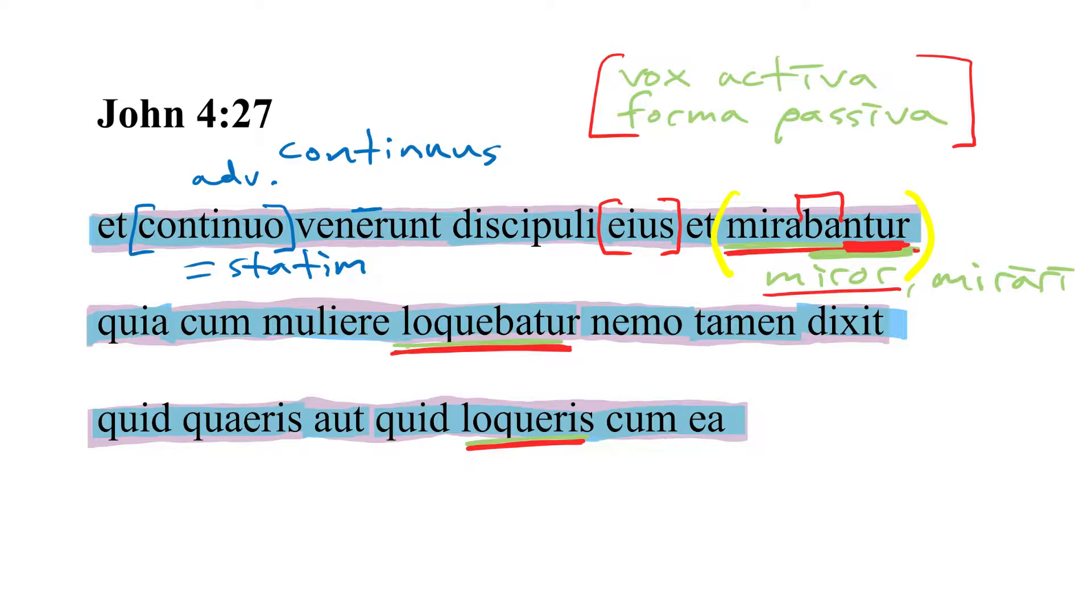But it's not they were being wondered at passively. In fact, the sense is active because it's a deponent verb. It's kind of a false friend. It might deceive you if you're not careful. So mirabantur, they themselves were astonished, they were amazed.